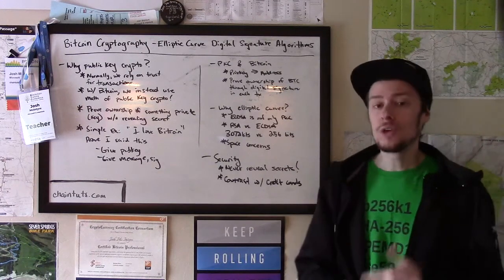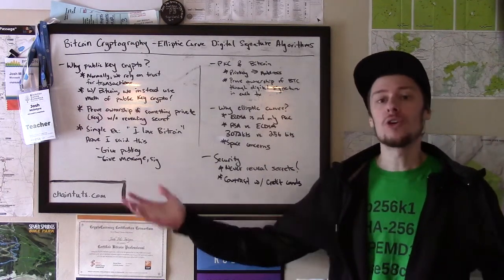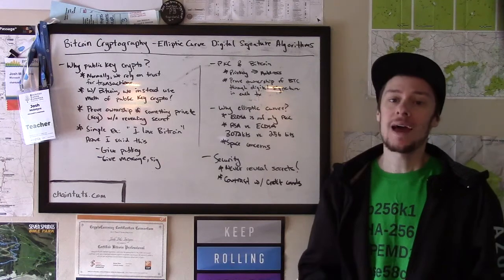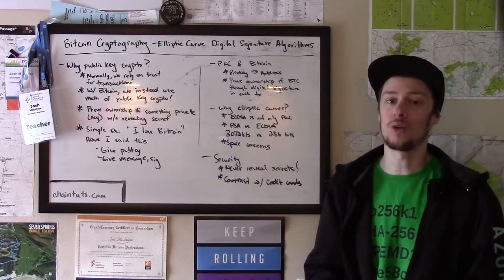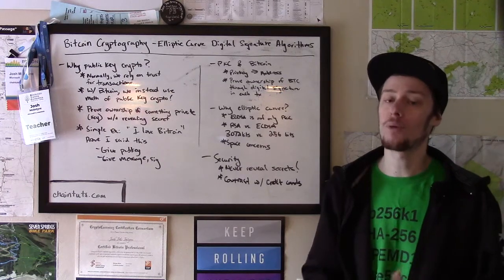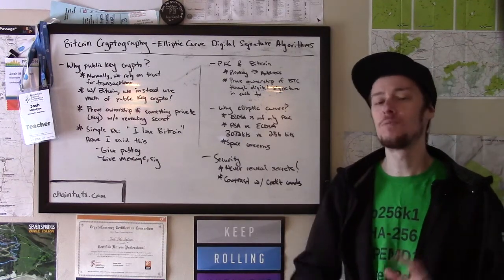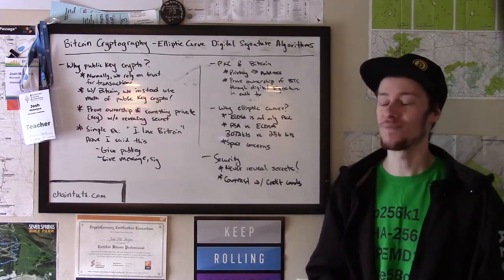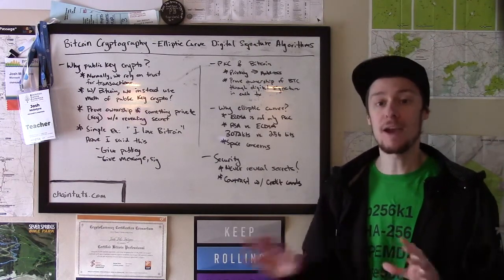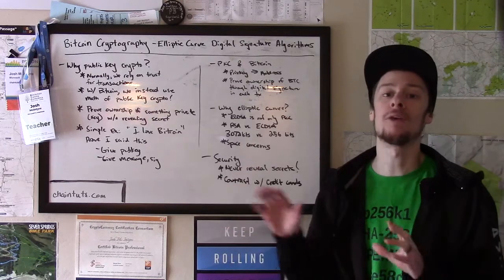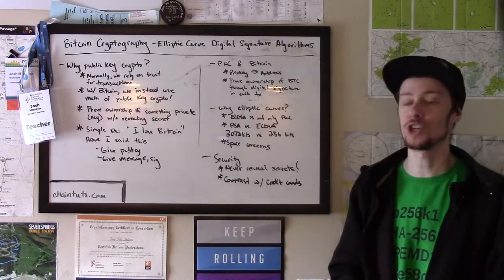So what you would do is you would pre-share your public key with everyone. Now, ensuring that everybody gets the right public key and not a fraudulent one is an important problem in cryptography that's beyond the scope of this example. Let's say for the purposes of this exercise that everyone has your true and rightful public key that you have shared with them.